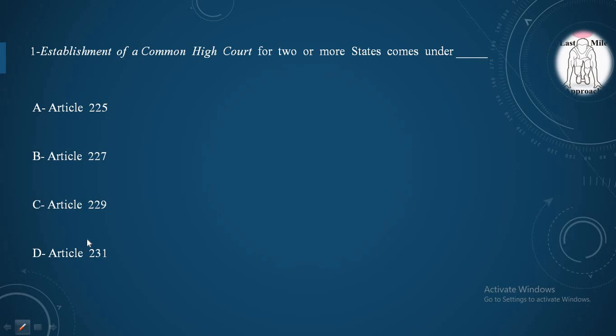First question of the day is asking: Establishment of a common high court for two or more states comes under Article 225, Article 227, Article 229, or Article 231? And the correct option is option D. Article 231 describes the establishment of a common high court for two or more states.